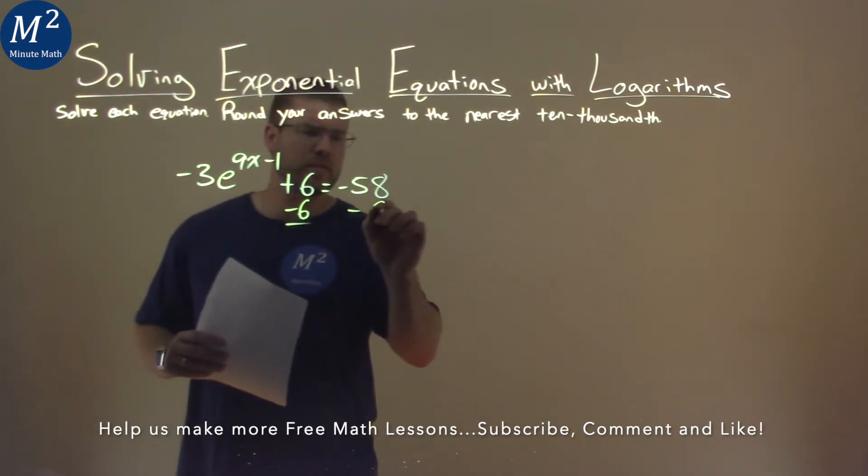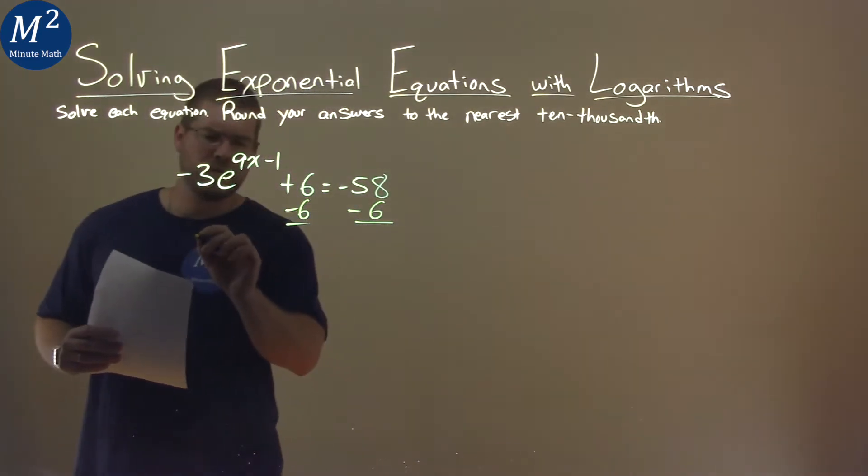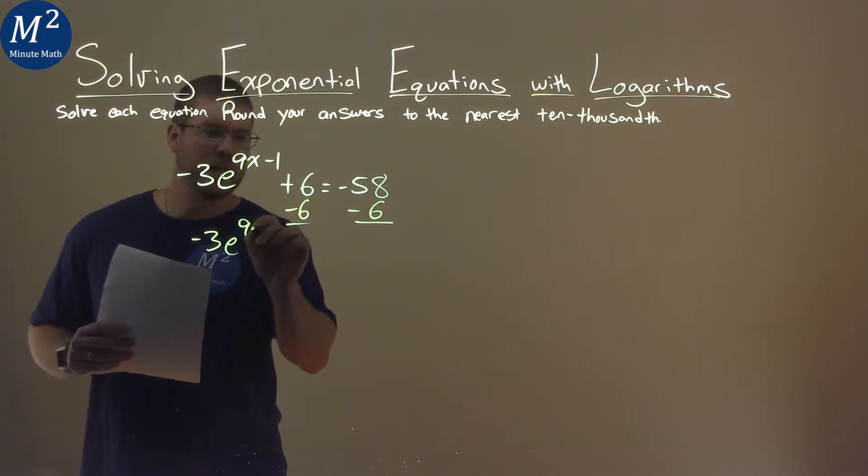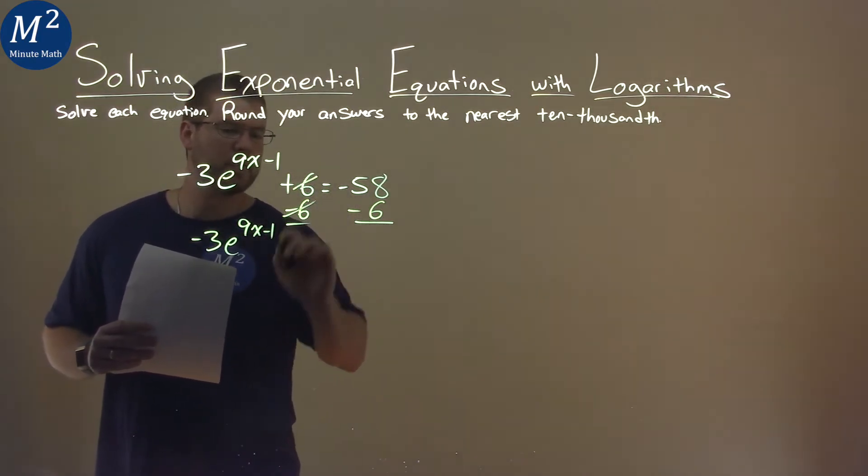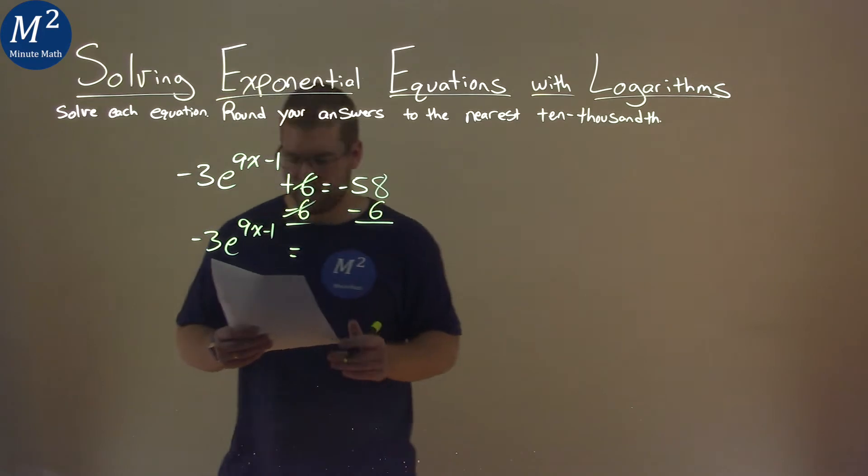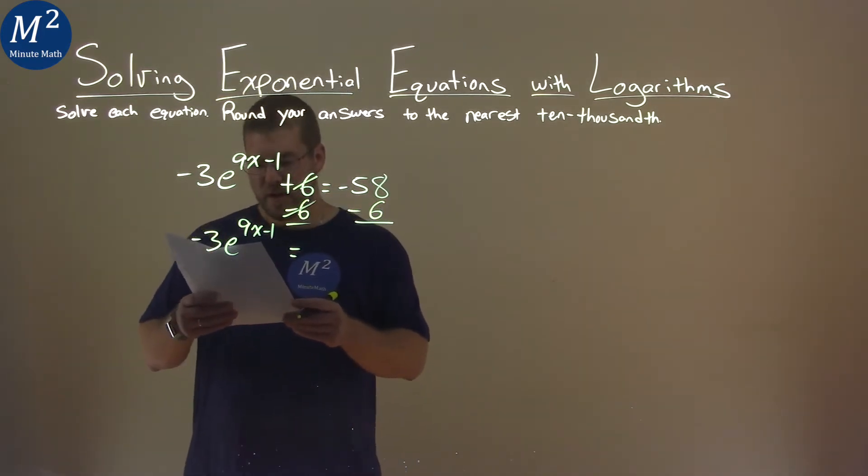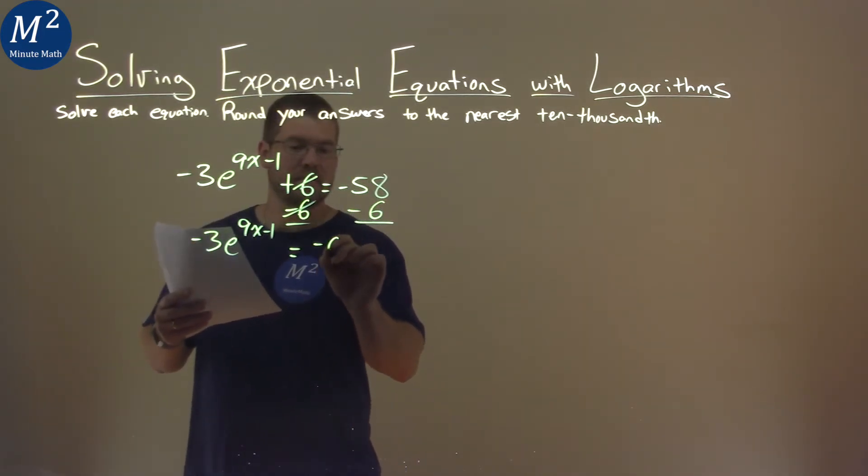I'm first going to subtract 6 from both sides here. In doing so, I have negative 3e to the 9x minus 1 power, and the 6s cancel. That's equal to negative 58 minus 6, which comes out to be negative 64.